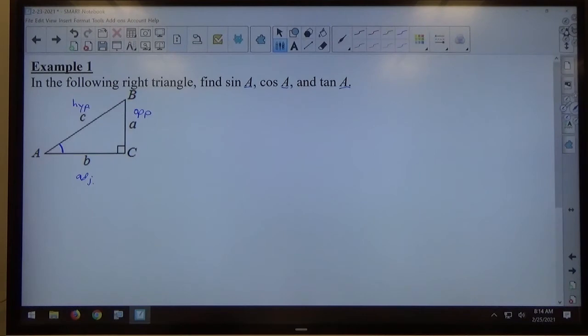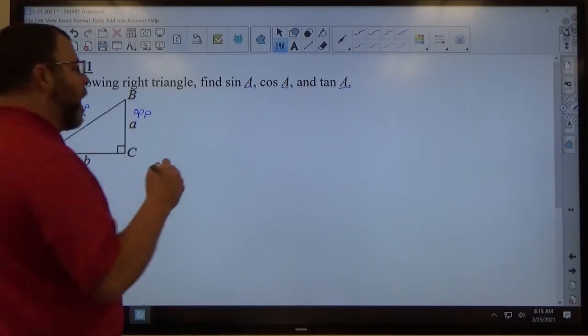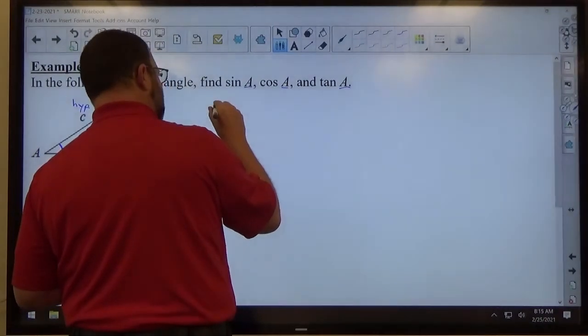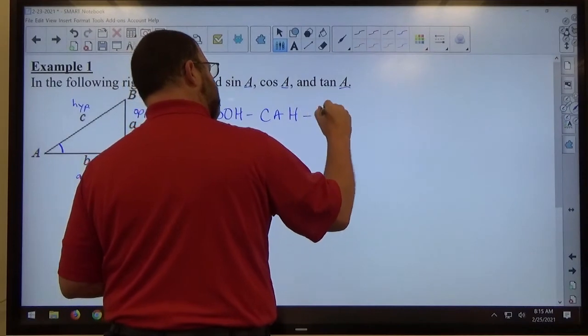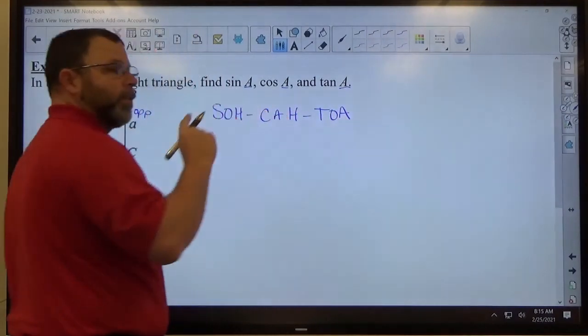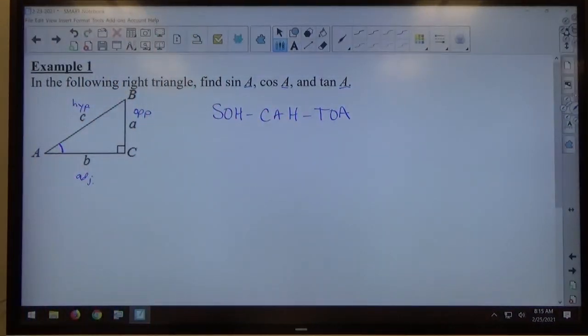All right, once we've established opposite, adjacent, hypotenuse, now I want to find sine, cosine, and tangent of A. I want you, until further notice, to write SOH CAH TOA any time you use that idea. So any time you're doing a sine or a cosine or a tangent, at this moment in time, I want you to write that down every single time. You will learn how to spell it rather quickly by doing that.